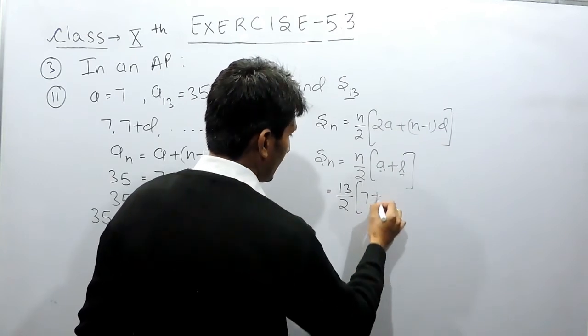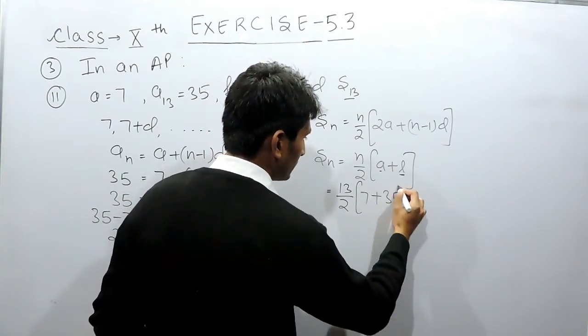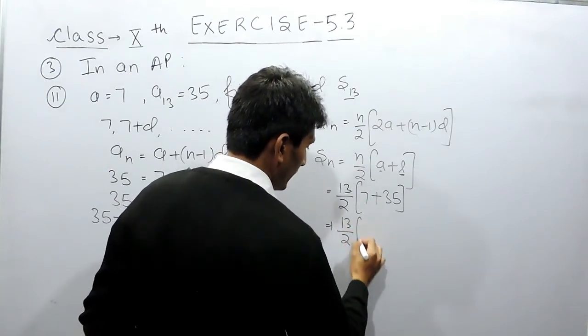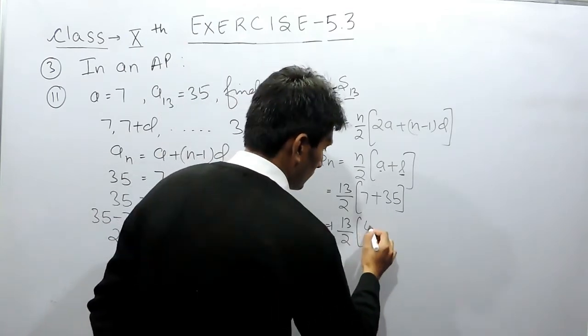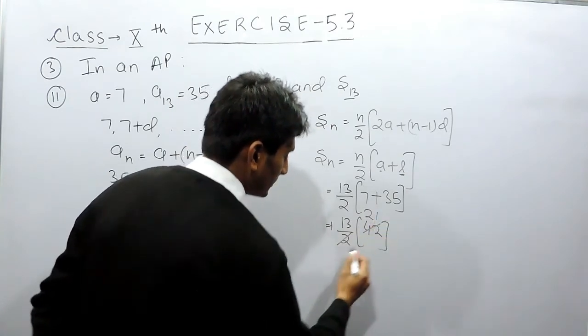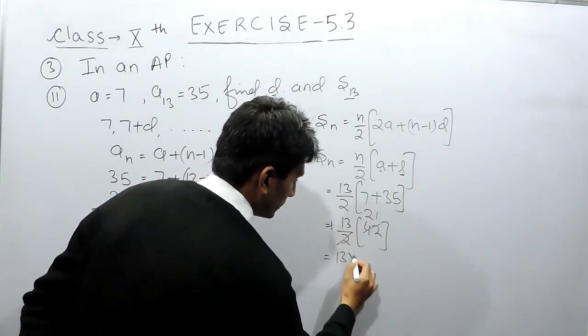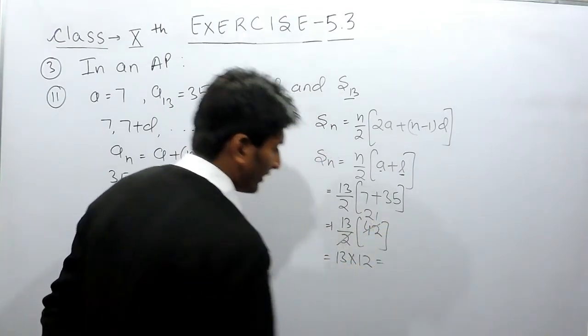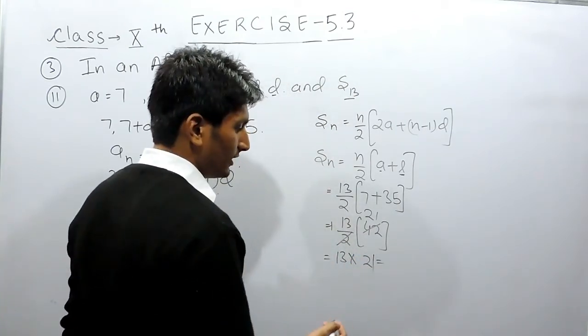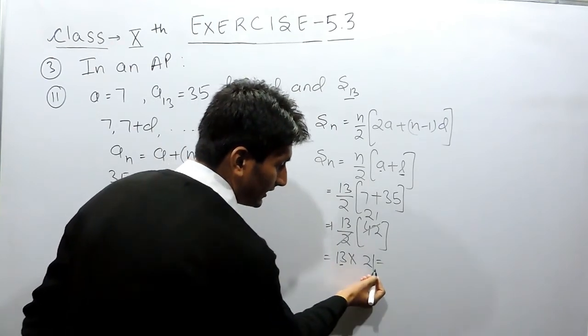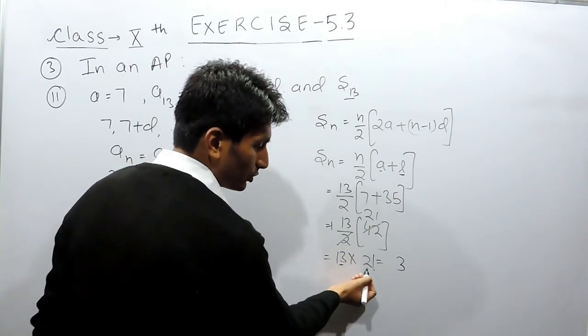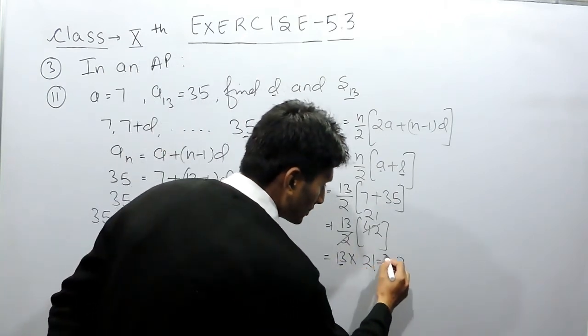Here the number of terms are 13, so it's 13 by 2. The first term is 7 and the last term is 35. This is 13 by 2, and 35 plus 7 equals 42. This can be cancelled to get 13 by 2 times 21. So 13 into 21: 13 times 1 is 13, write 3 carry 1, and 13 times 2 is 26 plus carry 1 equals 27. So 273 will be the sum of this series.